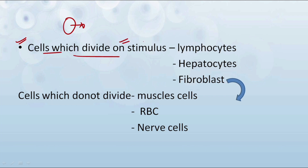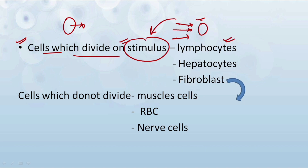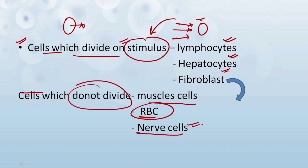The first type is cells which divide on stimulus. Stimulus in simple terms means an external signal — when a cell receives an external signal to divide, at that particular time these cells divide. For example, the lymphocytes, hepatocytes, and fibroblasts. There are also some cells which do not divide — the muscle cells, RBCs, and nerve cells. Red blood cells do not divide because they do not have a nucleus; they are enucleated, and hence they do not divide in a lifetime.